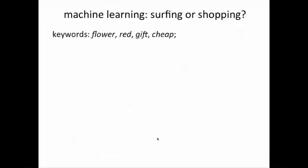For example, suppose we are searching for flower, red, gift, cheap. You're searching using some combination of these keywords, and the web property, which is Google, for example, needs to decide whether or not to show you some ads. In other words, are you a surfer or a shopper? Are you interested in buying something, or are you just browsing?